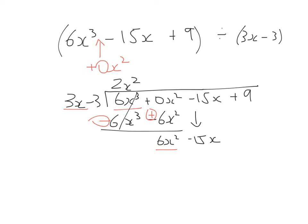And I start the process again. What do I multiply by 3x to get 6x²? That's going to be +2x. Multiply that by both my terms. That's 6x² - 6x. Change both their signs. So I've got -15x + 6x. So that's going to give me -9x. Bring down my next term.